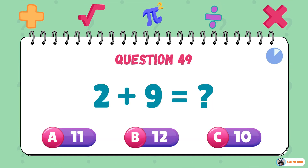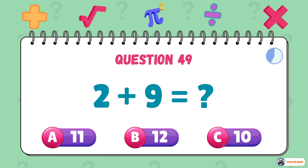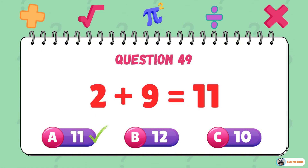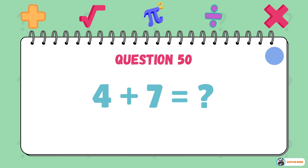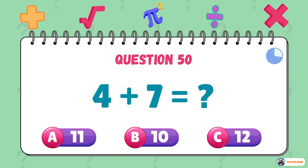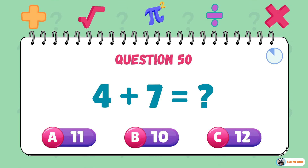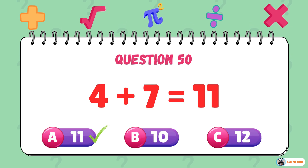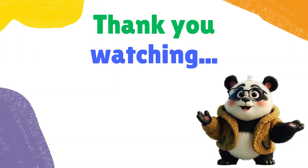What is 2 plus 9? The answer is 11. What is 4 plus 7? The answer is 11.